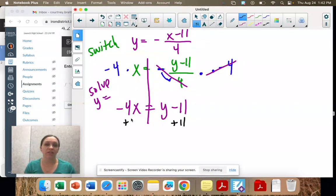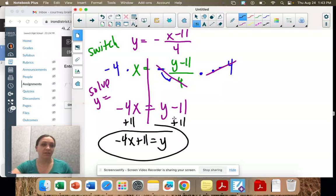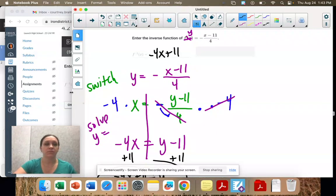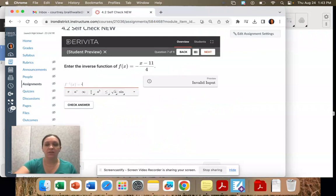Now we add the 11 to the other side. Remember, these are not like terms. They stay separate. Negative 4x plus 11 equals y equals the inverse. So negative 4x plus 11.